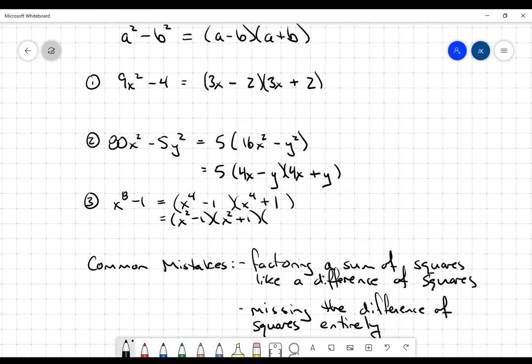But notice that x to the 4th plus 1 is not a difference of squares. First of all, it's not a difference. So it doesn't follow that pattern. And at this point in time, there's really nothing much we can do with it. So that's kind of a dead end for us right now. We're just going to leave it as x to the 4th plus 1.